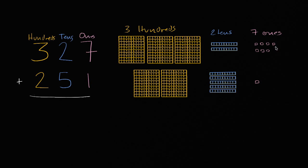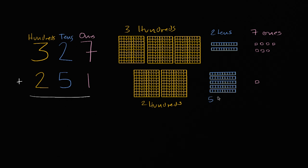Now to that, I want to add 251. Another way of thinking about it is I want to add two hundreds, because the two is in the hundreds place. One hundred, two hundred. Fifty is the same thing as five tens — we see a five in the tens place. Five tens right over here.